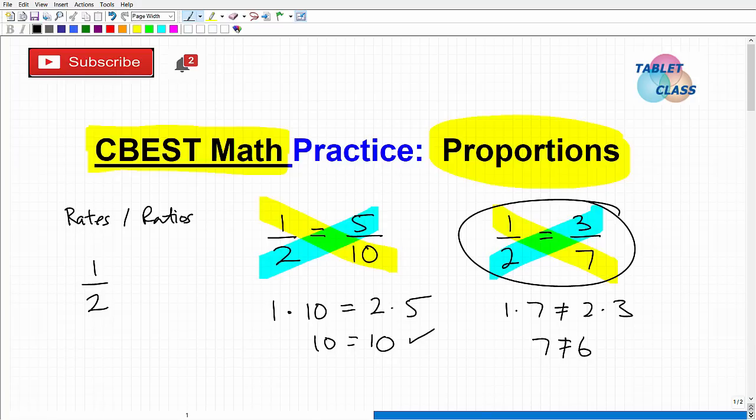A rate is where the units of measure of your fraction are different. For example, I might have, let's use a different one here. Let's say 60 over 1. I might have 60 miles might be my numerator, and then my denominator might be 1 hour.